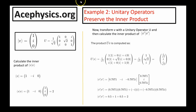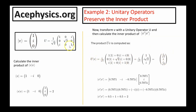I want to demonstrate the important property that unitary operators preserve the inner product. Using a vector v and the unitary operator U, I first calculate the inner product of v with itself, which equals 2. Then I transform v with the unitary operator to get v prime — the vector changes from (1, i, 0) to (1/√2, i/√2). Taking the inner product of v prime with itself, using i² equals negative 1, the answer is also 2. This demonstrates that the inner product is invariant under unitary transformation.